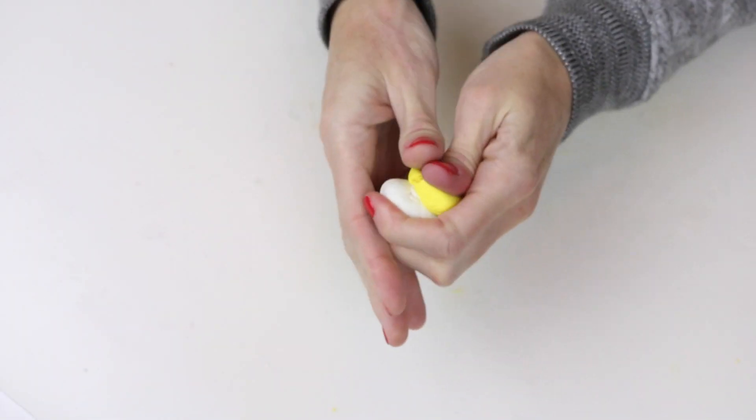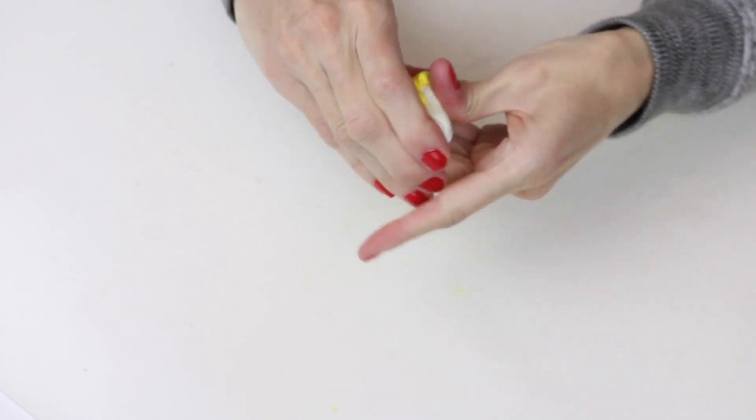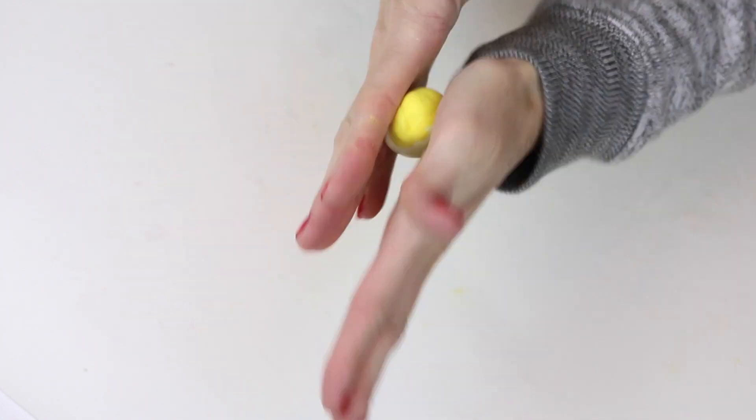For the popcorn, I just took some white and yellow clay, molded that together, rolled it into a ball, and then you will want to roll it out into a snake shape.